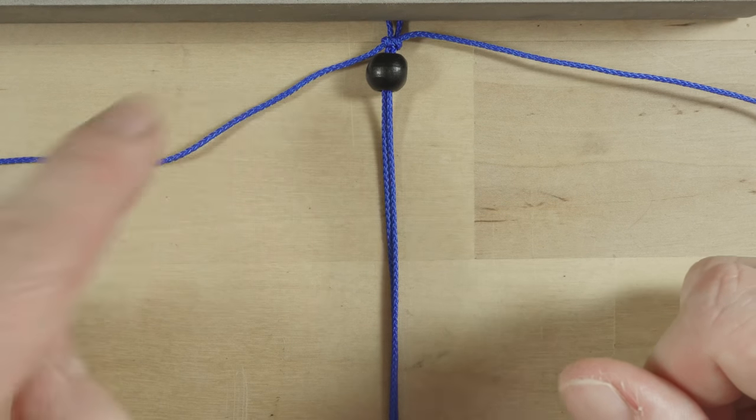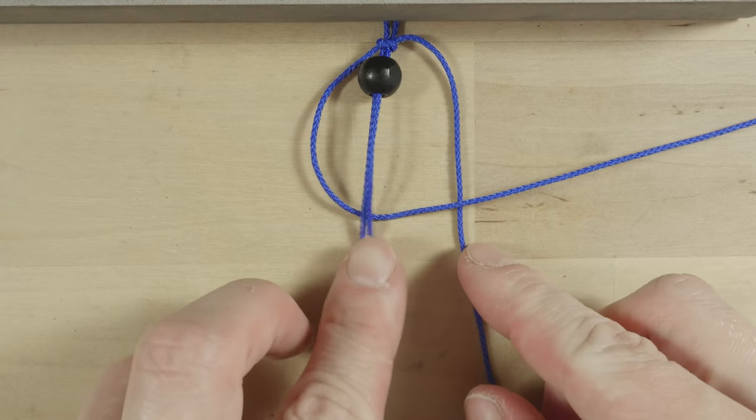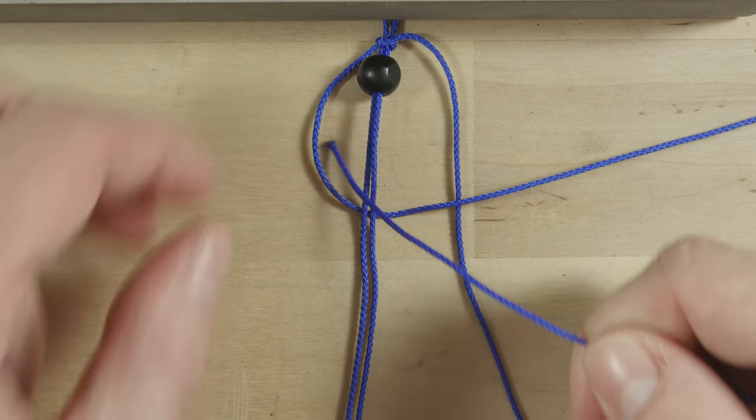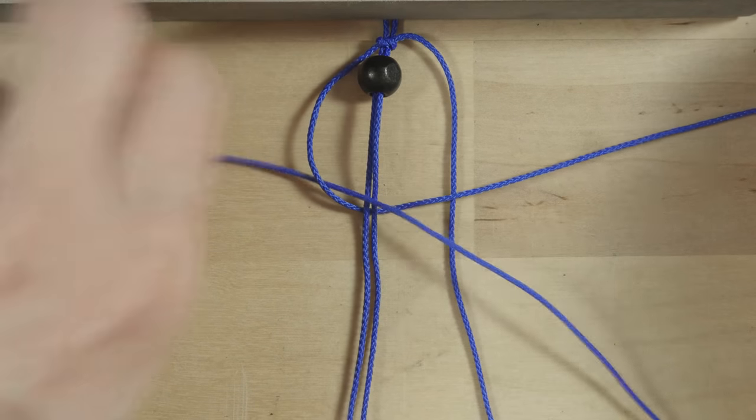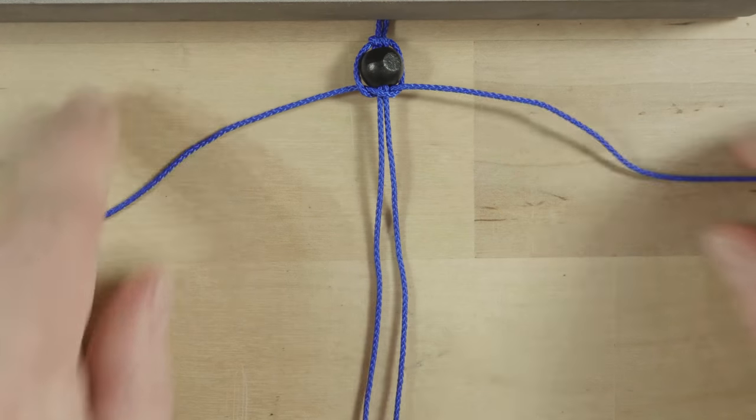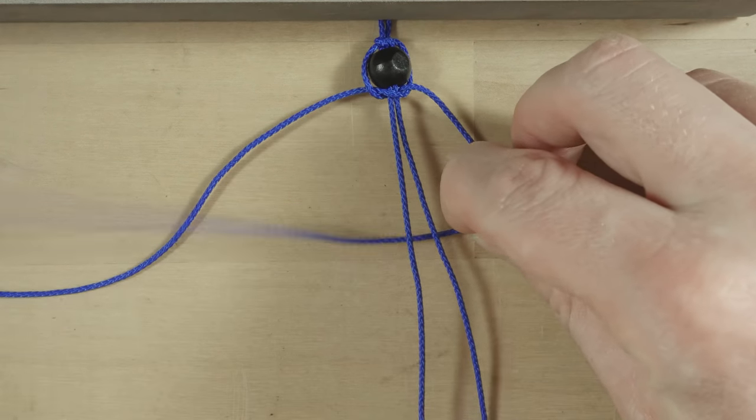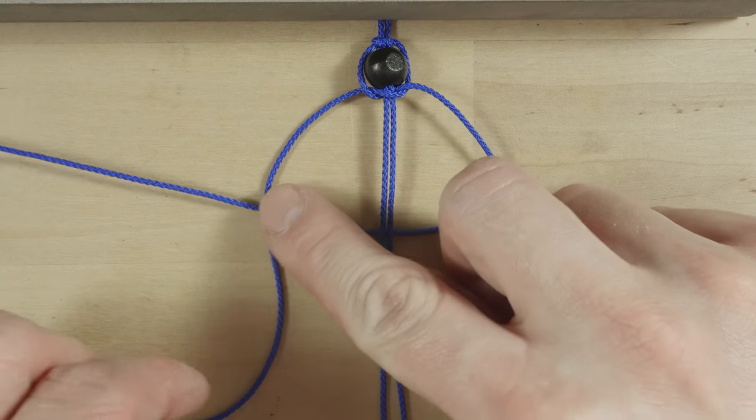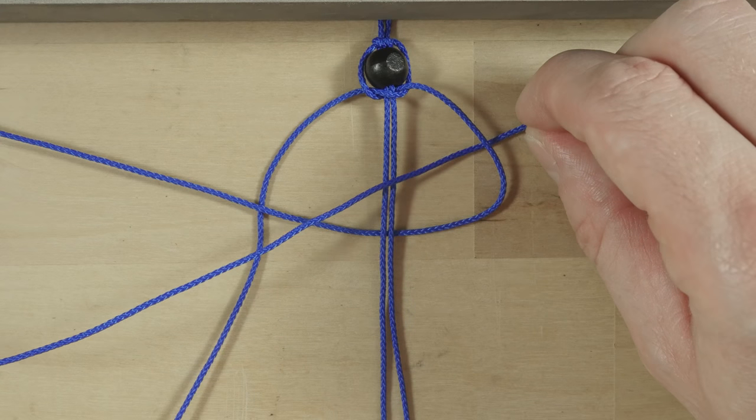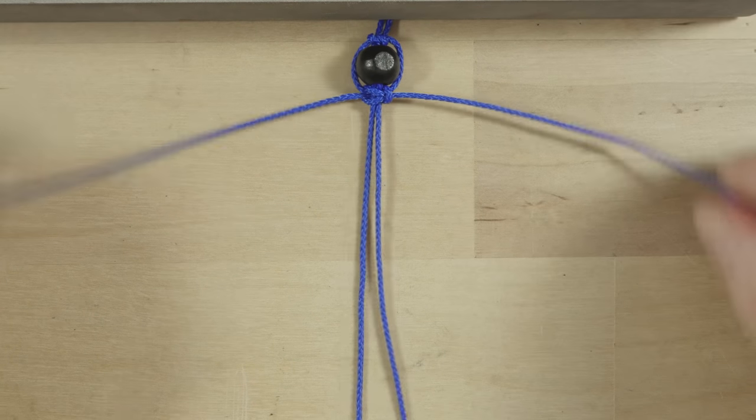Take the left strand, pass under two and over the right end. Take the right end over the top into the loop on the left. Tighten up. Then, take the right end under two and over the left end. The left hand passes over the top into the loop on the right, tighten up.